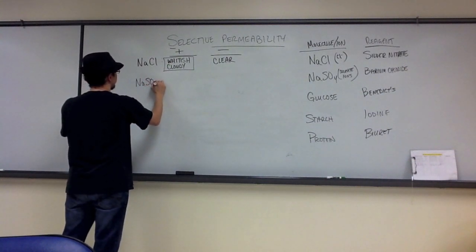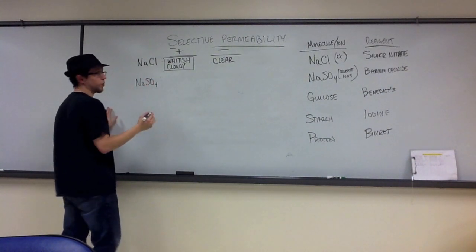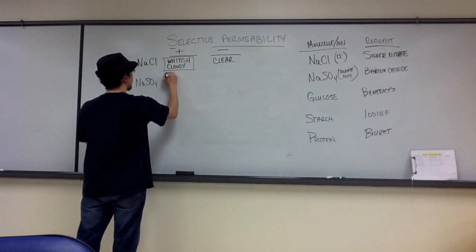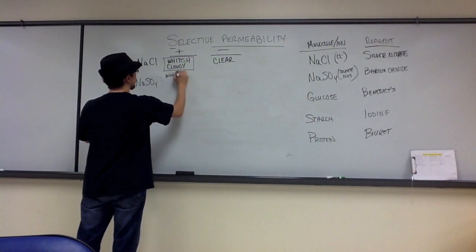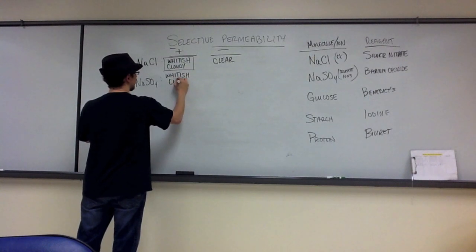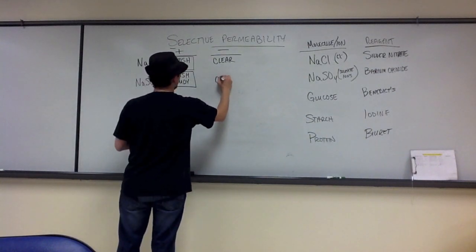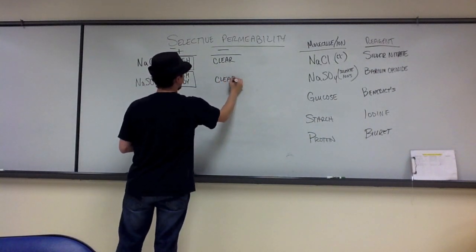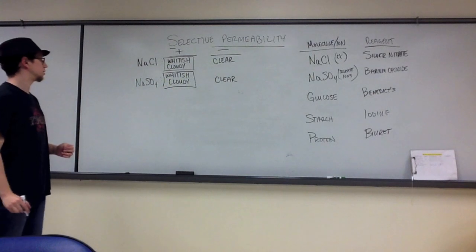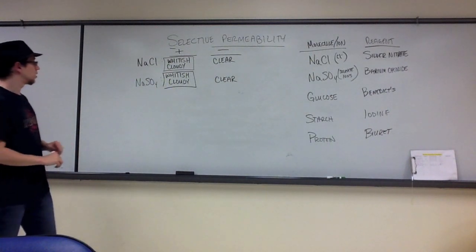For the sulfate ions, with the addition of that barium chloride, we're also going to see a whitish, cloudy color if we have a positive result, which we did observe. If we have a negative result, we expect to see a clear color. The solution should stay clear.